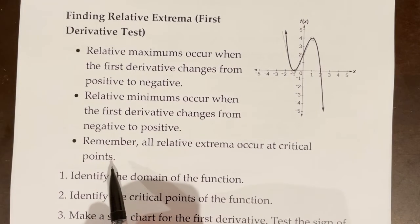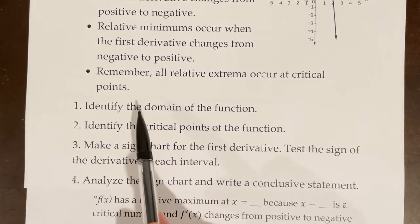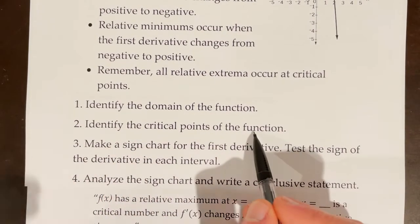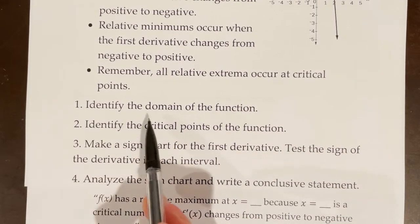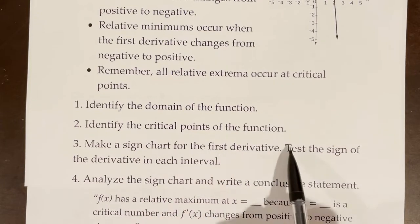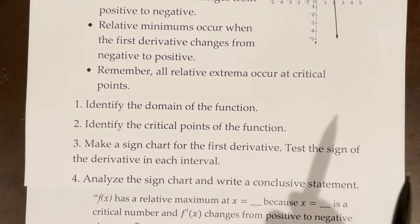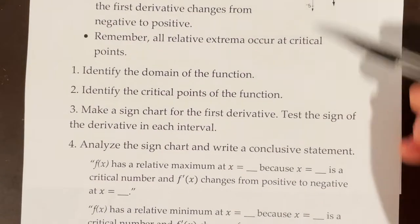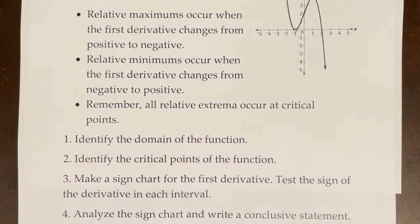Remember that all relative extrema occur at critical points. Therefore, if we are trying to find relative extrema algebraically, one of our first steps is identifying the critical points. The steps are: identify the domain, then the critical points, make a sign chart for the first derivative testing the sign in each interval, and then analyze the sign chart and write a conclusive statement. These steps are extremely similar to the steps for finding intervals of increasing and decreasing.